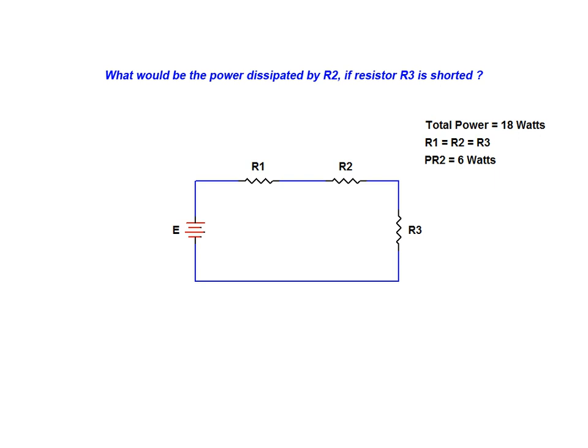As source and resistor values are not provided in the question, we will allow the variable X to represent the circuit current under normal conditions. We will now express the power dissipated by resistor R2 under normal circuit conditions in terms of the unknown current and unknown resistance value.